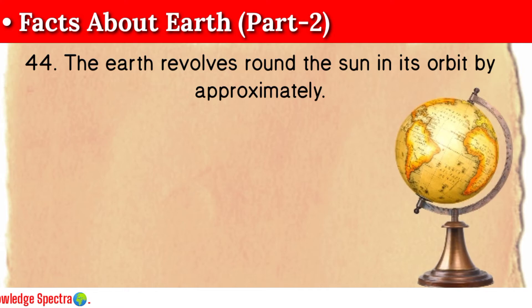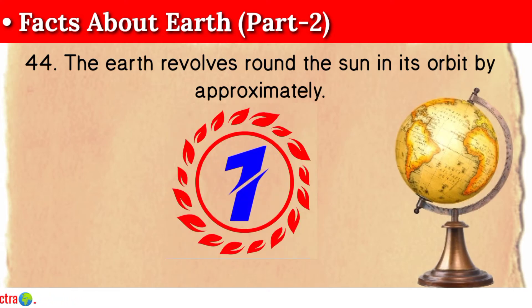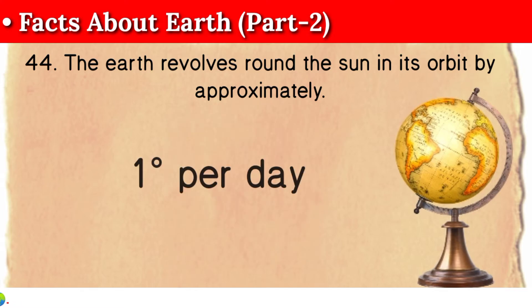Question 44: The Earth revolves round the sun in its orbit by approximately one degree per day.